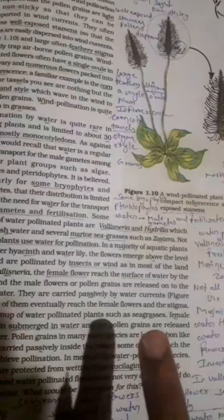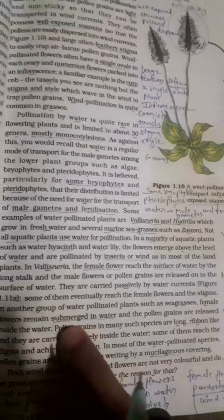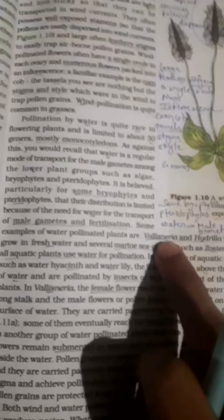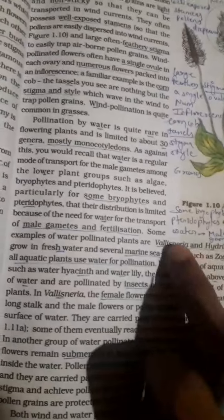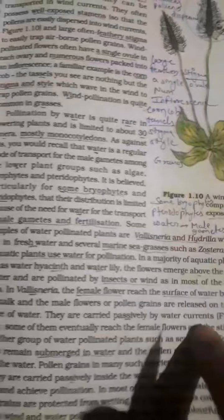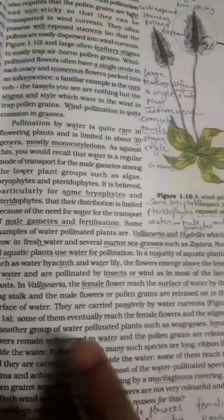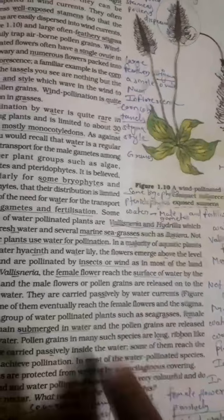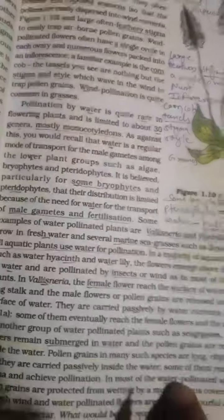After this, Vallisneria and Hydrilla in case of water. Listen, Vallisneria is at the surface, Vallisneria at the surface. And sea grasses like Zostera, submerged in water. This point is important - Zostera is submerged in water pollinated.